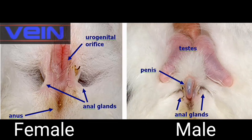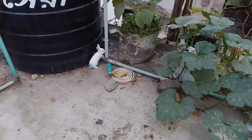The next method is to examine the reproductive structure. In this picture, you can see the difference between a male and female rabbit by their reproductive structure or sex organs. The male rabbit's penis and reproductive system are shown on the right side, and the female rabbit's reproductive system is shown on the left side. By matching this picture, you can easily identify the gender of your rabbit.